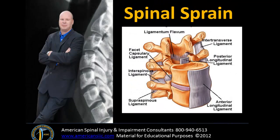A spinal sprain is any time you injure any aspect of the spinal motion unit's ligaments. There are 10 ligaments: the anterior longitudinal ligament, the posterior longitudinal ligament, the disc, two inner transverse, two capsular ligaments, ligamentum flavum, an interspinous ligament, and a supraspinous ligament. Damage to any of these ligaments is considered a spinal sprain.